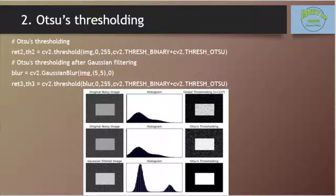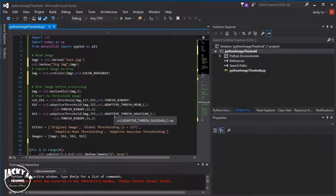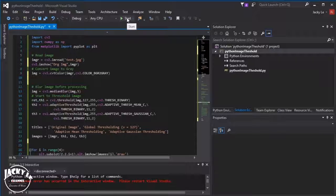That is what OTSU binarization does. So in simple words, it automatically calculates a threshold value from the image histogram for a bimodal image. Go to the code to check details on how the method works.